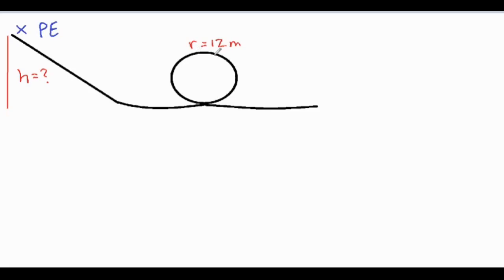As soon as a roller coaster gets to the top of a loop and the person is upside down, they will still have some potential energy because they are off the ground and they will also have some kinetic energy because they are in motion.